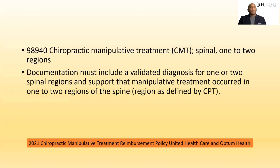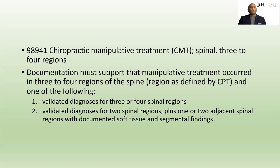The big issue is making sure there's a clear understanding of how we choose these codes. From OptumHealth and CMS, here is their ratio distribution and use of the code. Documentation for a 98940 must have a validated diagnosis for one to two regions — that's pretty straightforward. However, 98941 is a little different: number one, a validated diagnosis for three to four regions; but also a validated diagnosis for two spinal regions plus one or two adjacent spinal regions that document soft tissue findings.